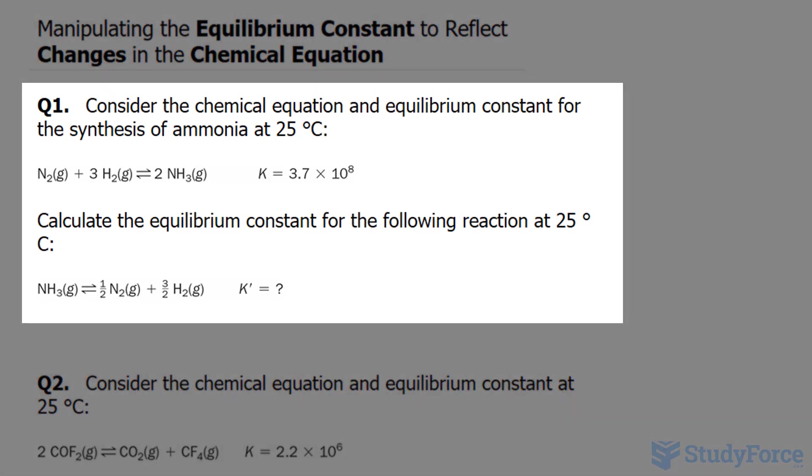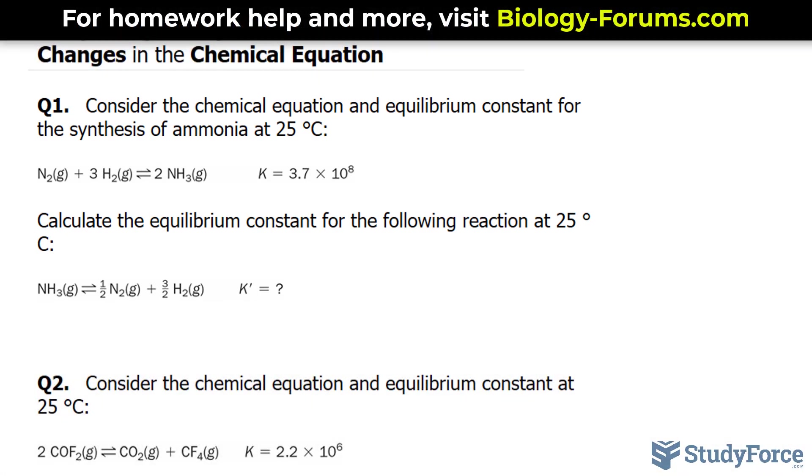Question 1 reads: consider the chemical equation and equilibrium constant for the synthesis of ammonia at 25 degrees Celsius. Notice that the constant is 3.7 times 10 to the power of 8.